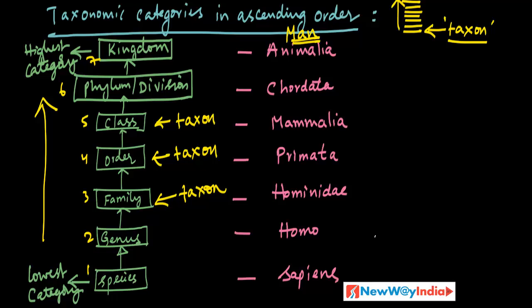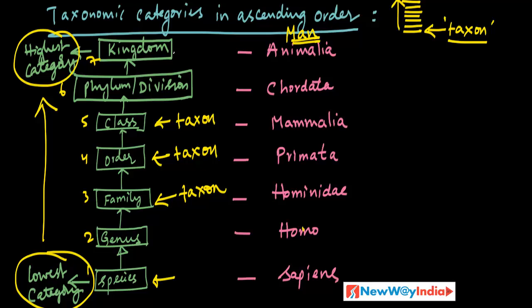You will get questions like: write down the taxonomic hierarchy of man, or in competitive exams: man belongs to class Mammalia; what is the scientific name of man — Homo sapiens; what is the family — Hominidae. The lowest category is species and the highest category is kingdom.